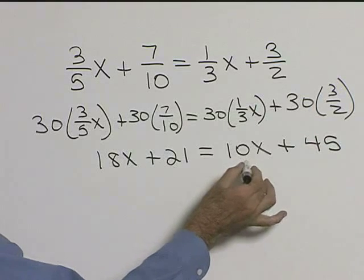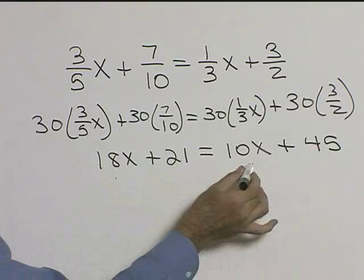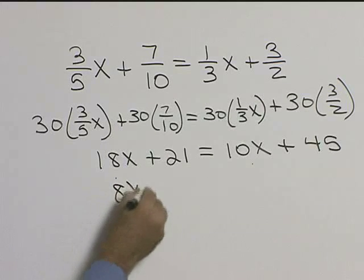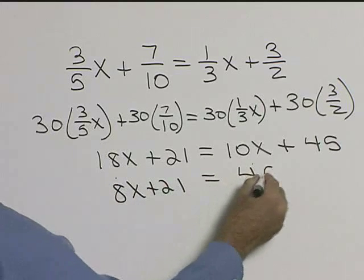Alright, let's get our x's together so we can subtract 10x from both sides. So this will give us 8x plus 21 is equal to 45.